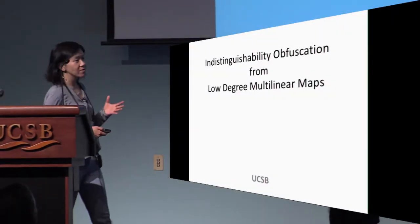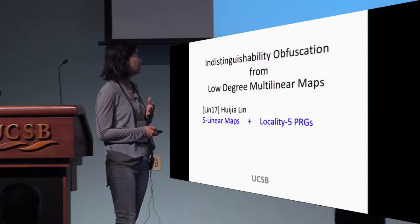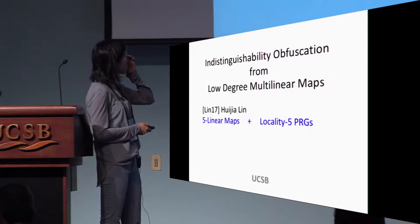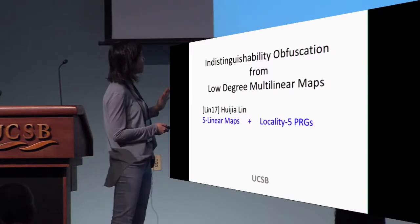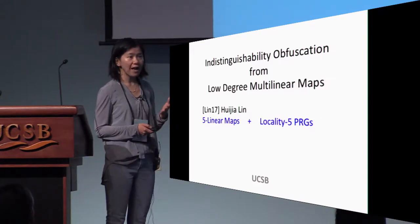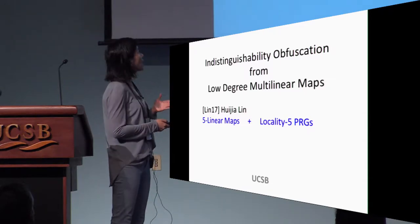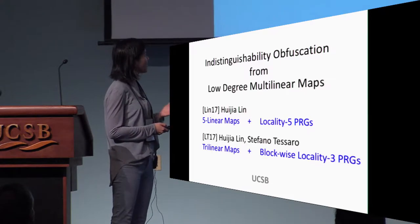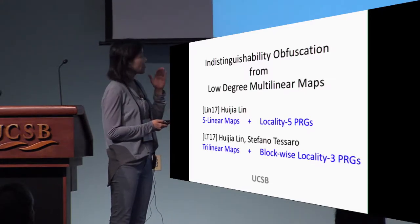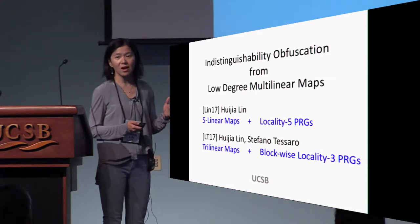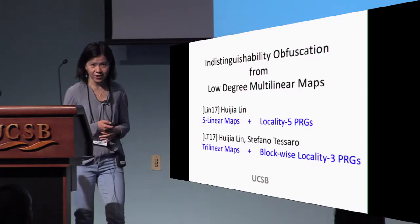We're trying to construct IO from low-degree multilinear map. In fact, this is a soft merge between two papers where in the first paper we achieve it from five-linear maps using locality 5 PRG, and in the second paper we do it from just three-linear map or tri-linear map using blockwise local PRGs.